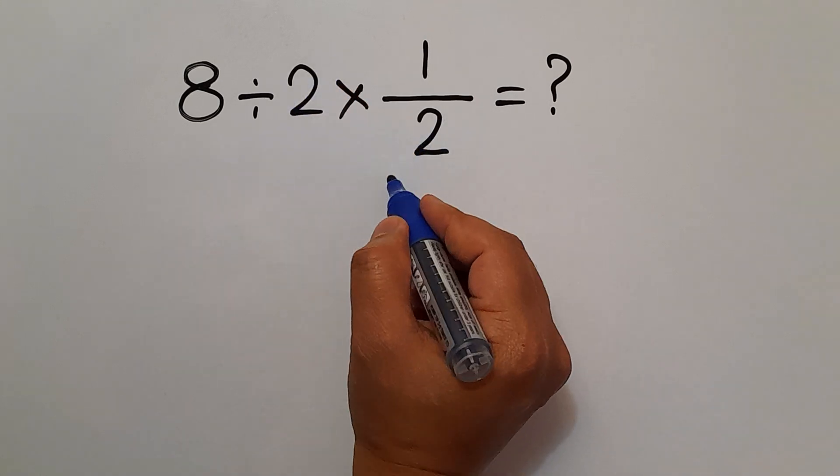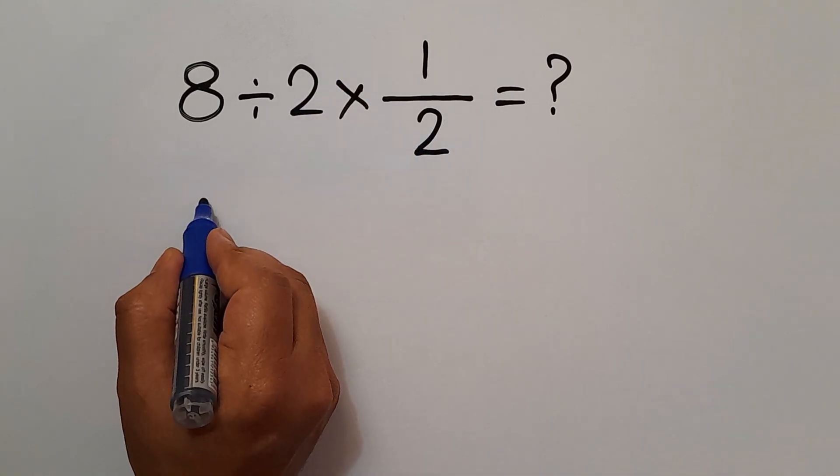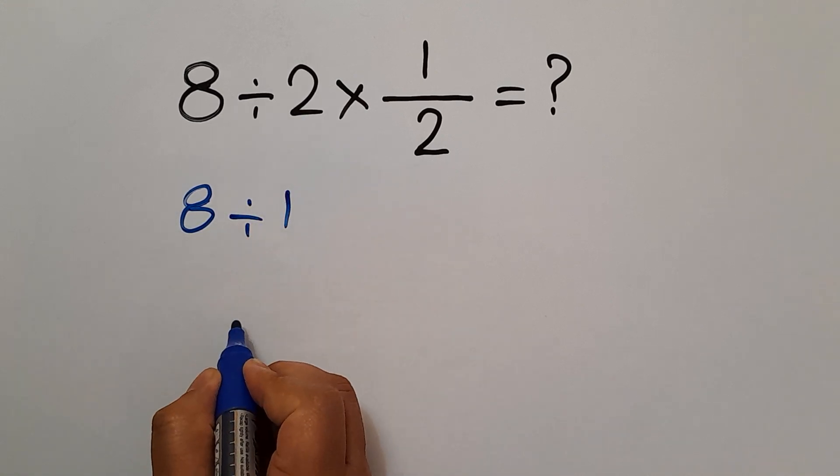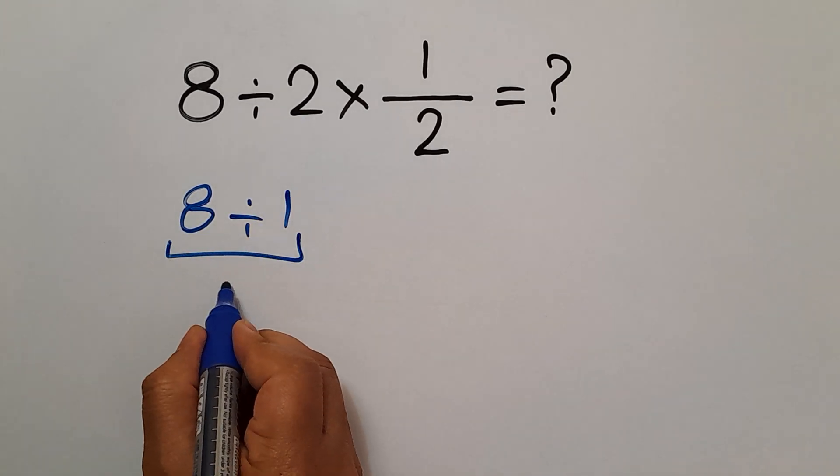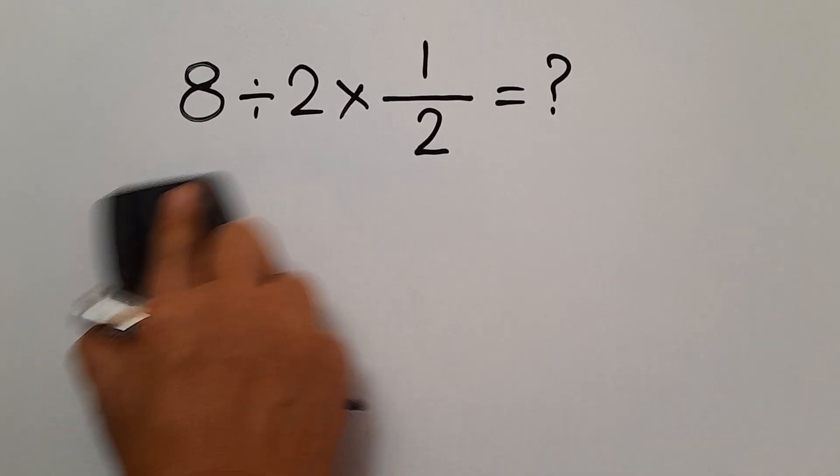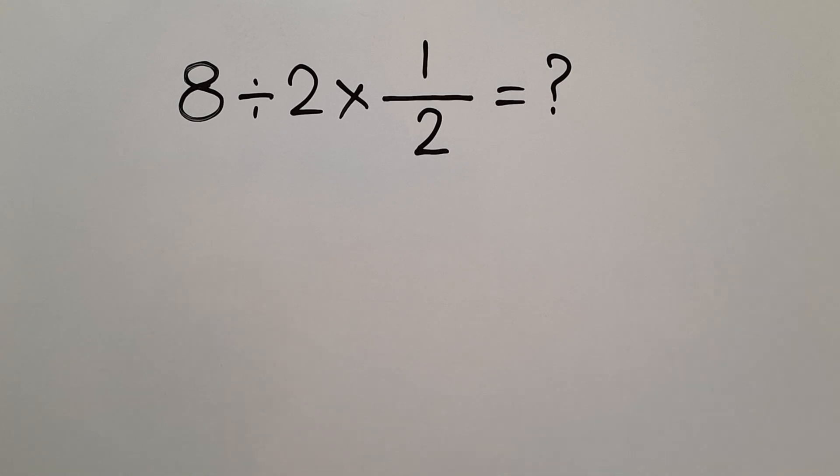So 8 divided by just 1, and 8 divided by 1 gives us 8. But this answer is not correct because according to the order of operations, which is PEMDAS...